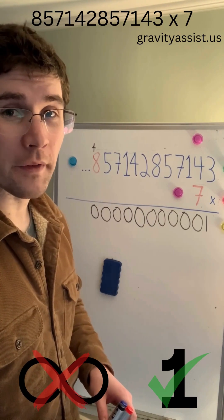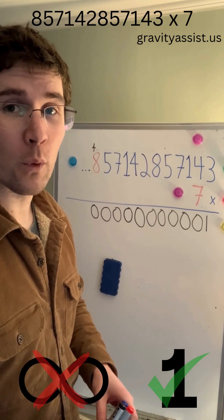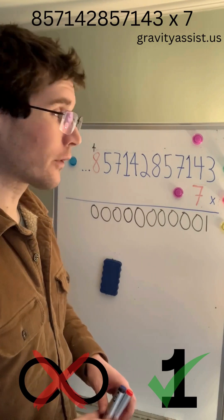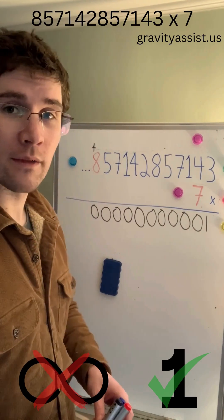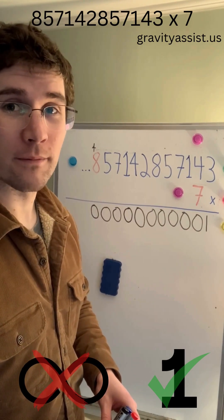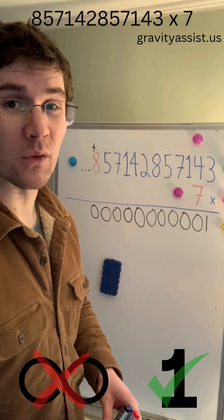7 times 8 equals 56 plus 4 equals 60, so we'll put another 0 down here, and we'll keep doing that forever. So our answer is 1.